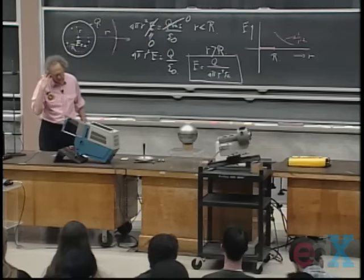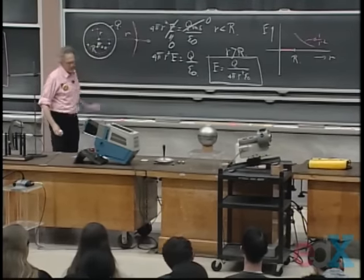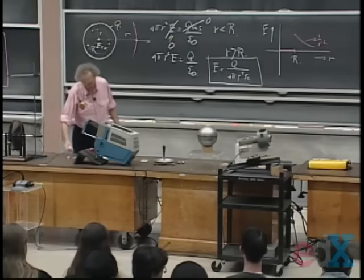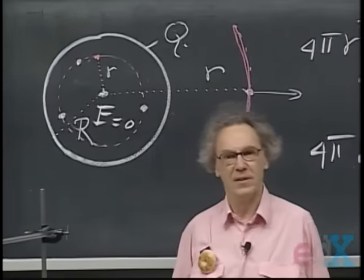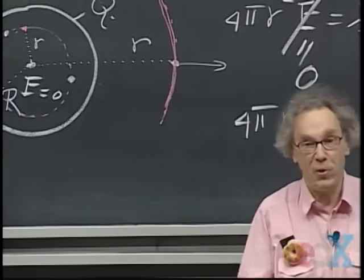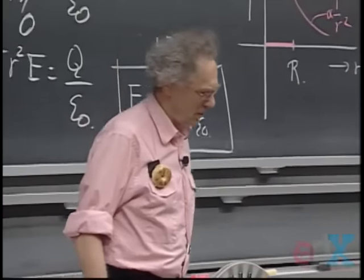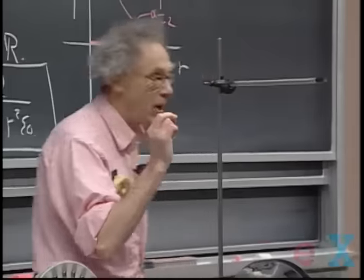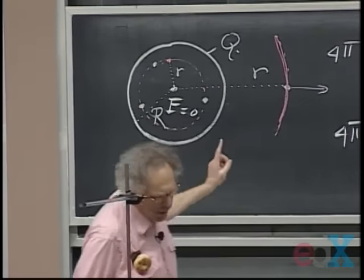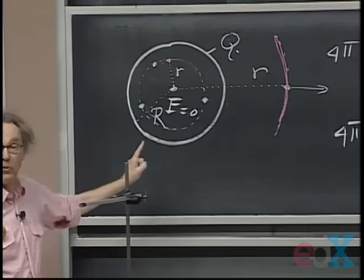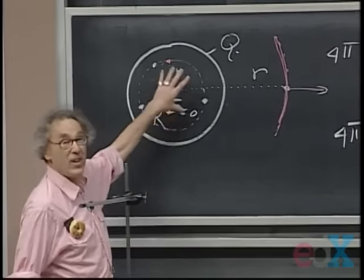Going back to the electric field inside being zero — you may ask: haven't you cheated, since you haven't used the charge outside? Well, I have used it through my symmetry arguments. The symmetry arguments take into account that the charge is uniformly distributed. If the charge on the sphere had not been uniformly distributed, I could not have used the symmetry argument, and the electric field inside would in fact not have been zero. If there is more charge on the sphere in one place than another, the field inside is not zero. So I have used all that charge through my symmetry argument.